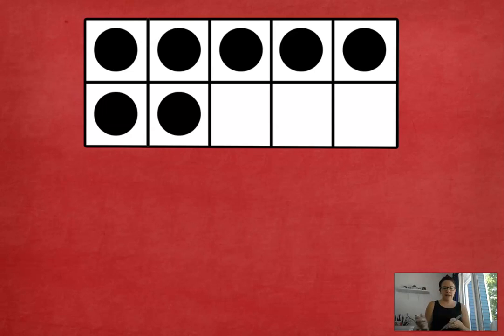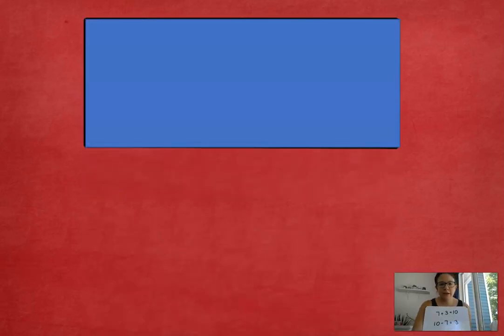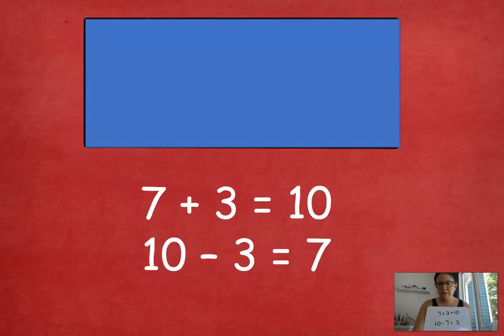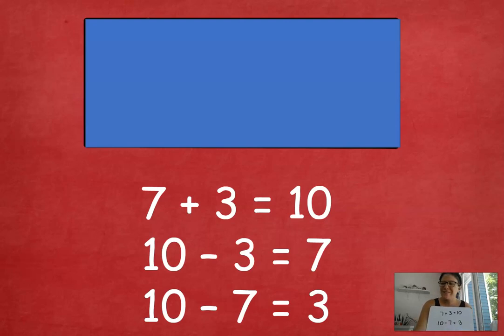Now we're going to turn that into a subtraction sentence. We start with our whole, which is 10, and then we can take either of the parts. We can either take 7 or 3, it doesn't matter. I'm going to pick 7, and then put the other part as our answer. So I have 7 plus 3 equals 10, 10 minus 7 equals 3. You can also do 10 minus 3 equals 7, whatever you choose. So let's check it here. Any of those answers work. I'm going to erase my whiteboard. Let's get ready for the next one.